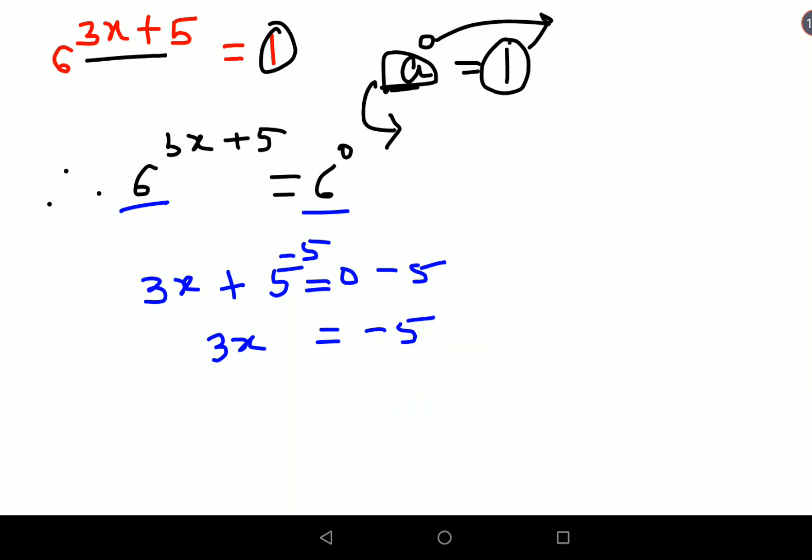Now in order to find just the value of x, we will divide both sides by 3. Therefore, I can say the x value is nothing but minus 5 by 3, or you can also write this as minus 1 and 2 upon 3. Either way, your answer is absolutely correct. So I hope you have understood how to solve this.